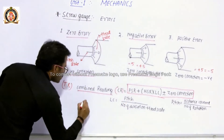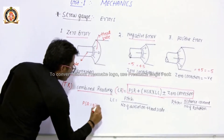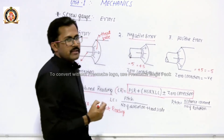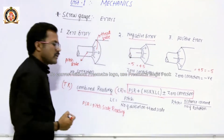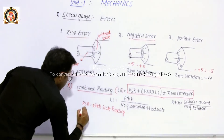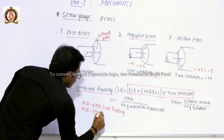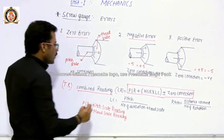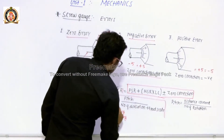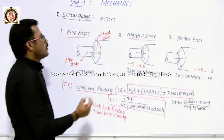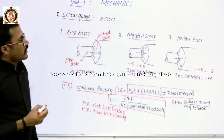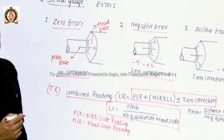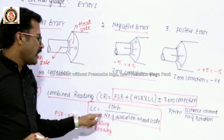Where PSR means pitch scale reading. The least count formula for a screw gauge: least count equals pitch divided by number of divisions on head scale. The number of divisions on the head scale may vary — it may be 50, 25, 100, or higher. So pitch divided by number of divisions on head scale gives the least count of the screw gauge.